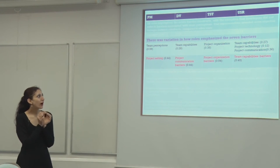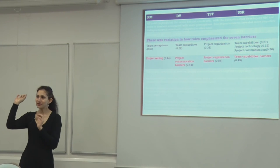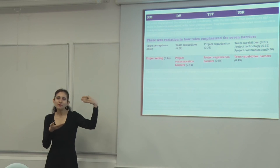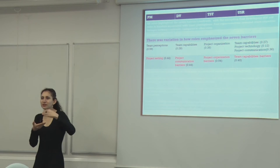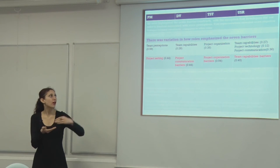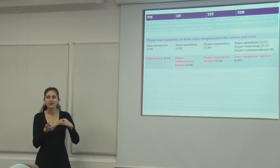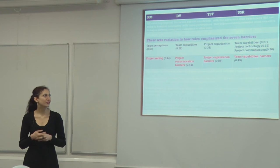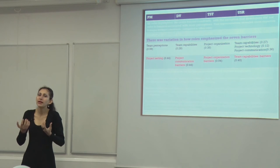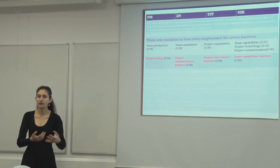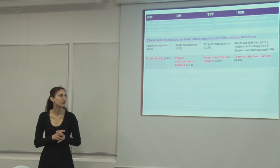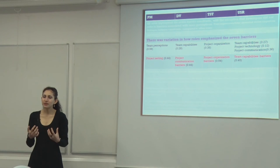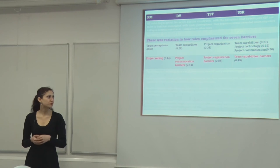There were also variations in how roles emphasized barriers. For example, project managers said that project setting barriers had the worst impact on knowledge sharing. Developers prioritized project communication barriers. Testers emphasized project organization, and team capabilities barriers were highlighted by user representatives. What matters most to one group is different from what matters most to another.